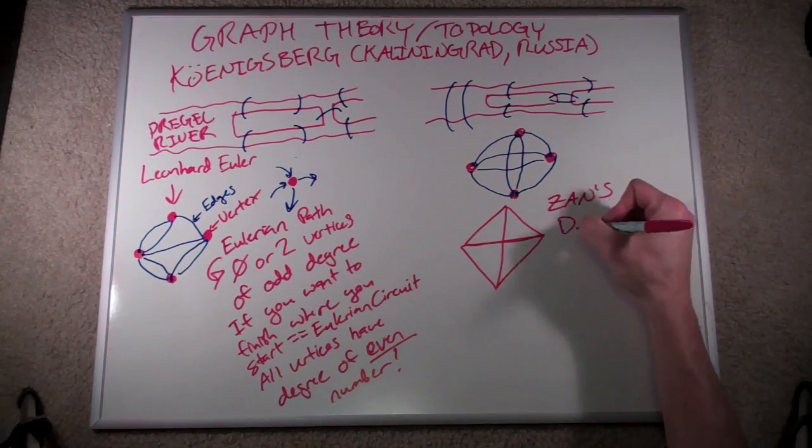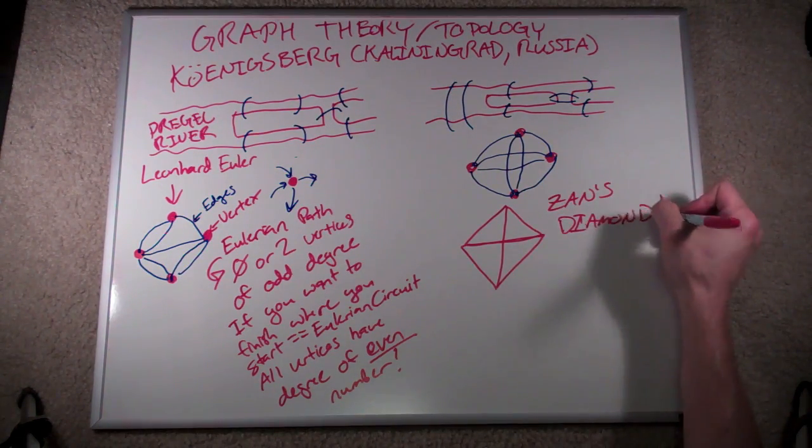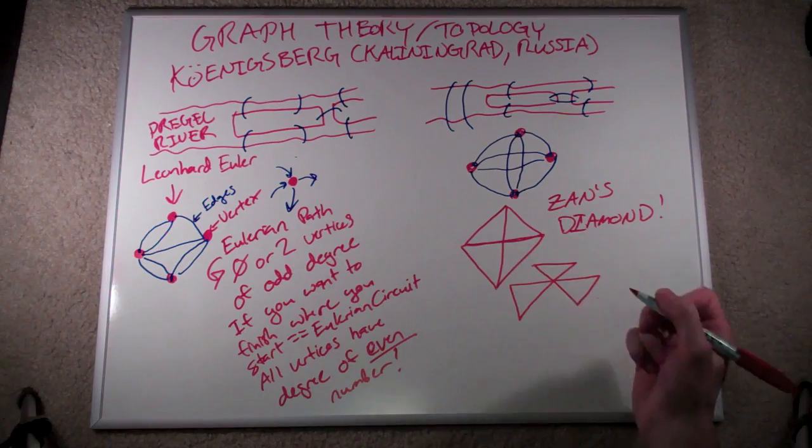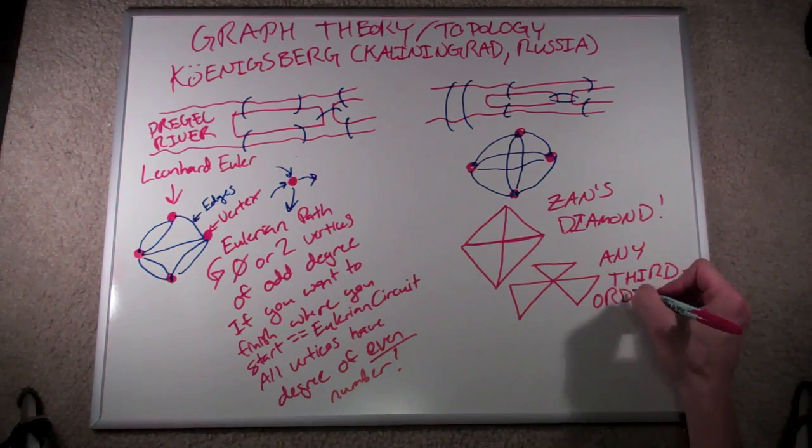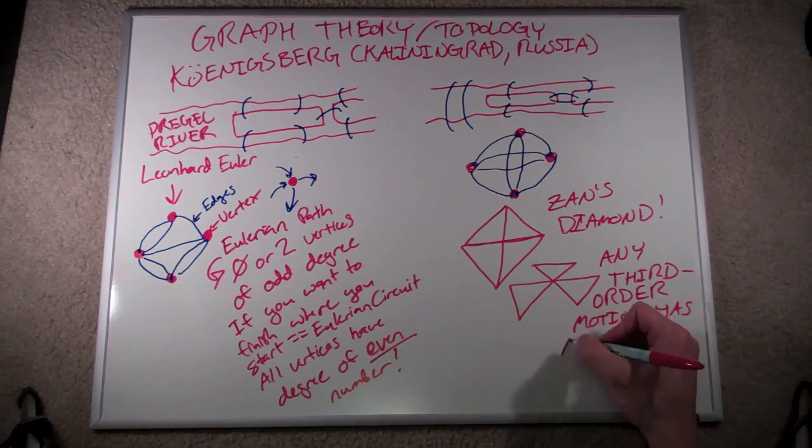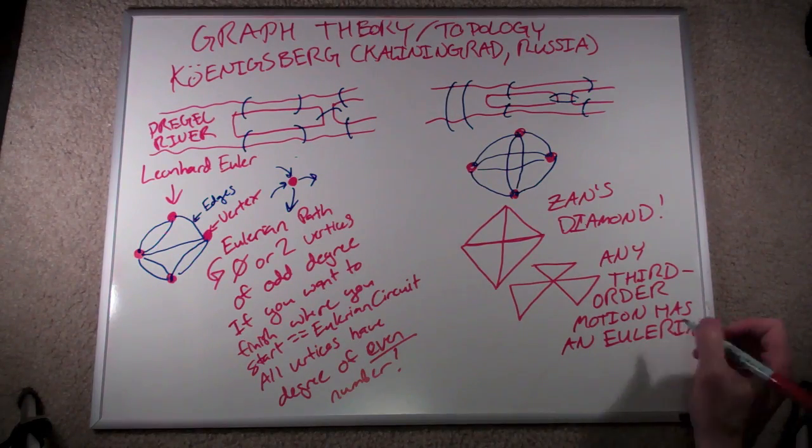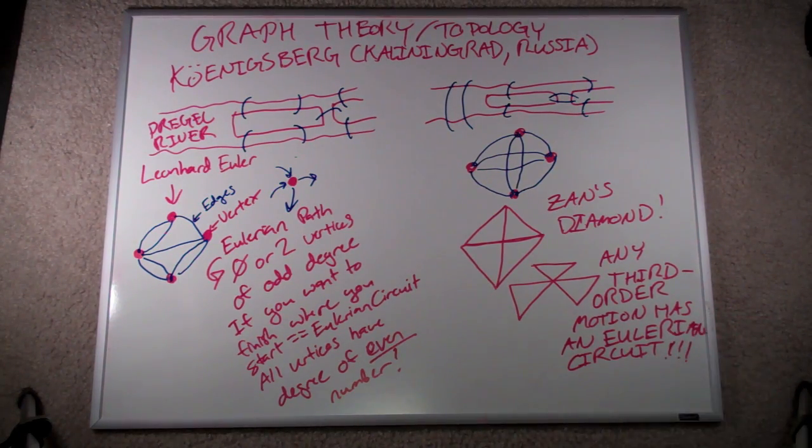This is because Zan's diamond is an attempt to do exactly the same thing, connect together four individual vertices via a series of line segments that never repeat. In fact, this is true of any third order motion. Each of them has an Eulerian circuit buried within it. How cool is that?